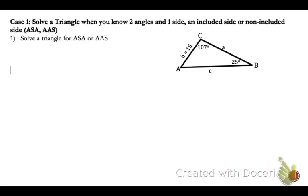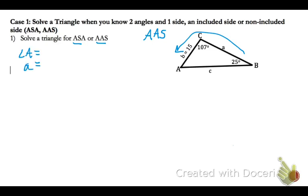Number one, case one, where we have two angles and a side — either an included or a non-included side. In this triangle, looking consecutively at what we know, we have angle, then the next angle, then side. To solve, we need to find angle A and sides A and C.